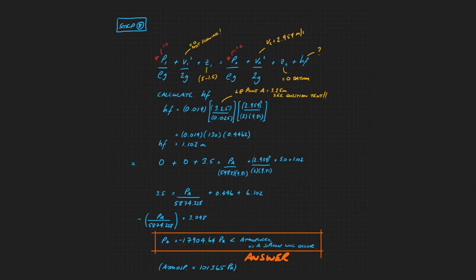We write out Bernoulli's equation comparing position 1, position A. We know that the pressure at 0.1 is 0 because it's atmospheric. V1 is 0 because it's not flowing. Z1 is 5 minus 1.5. PA equals 0 because it's atmospheric. VA is 2.959 meters per second. ZA is the datum. And HF, we don't know, but we can calculate that. We work out HF is 1.102 meters. We put that in and we end up with the pressure at point A equal to minus 17904.64 pascals.